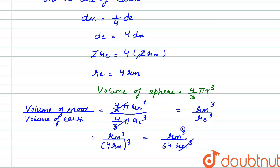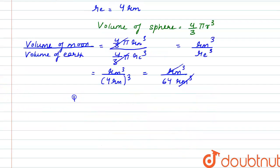So rm cube gets cancelled out. So we have the ratio of volume of moon to the volume of earth comes out to be one by 64. So from here we have found out that the ratio of their volume is one to 64.